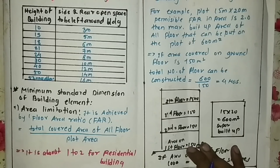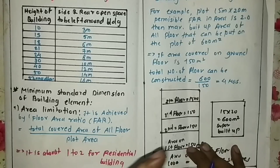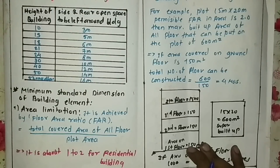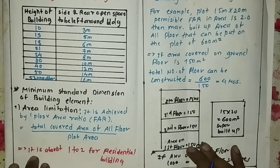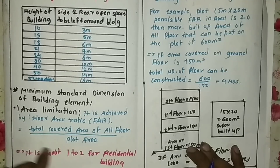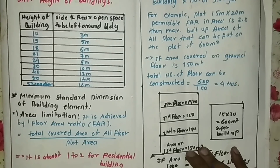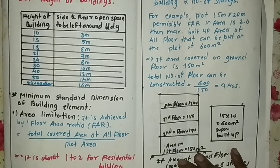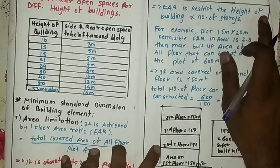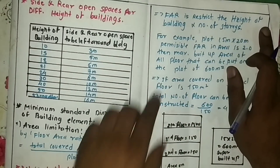FAR may vary from area to area, municipal corporation to municipal corporation, city to city. It is about 1 to 2 for a residential building. By paying some extra amount, you can increase your FAR in your area. FAR restricts the height of a building and the number of stories.